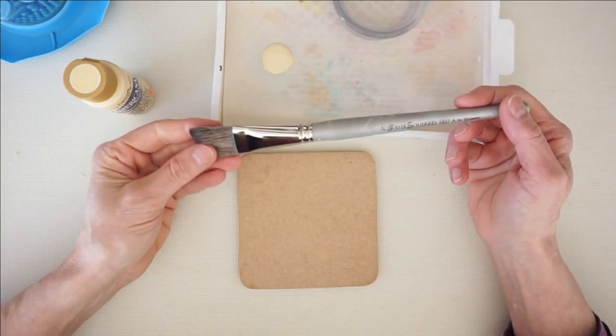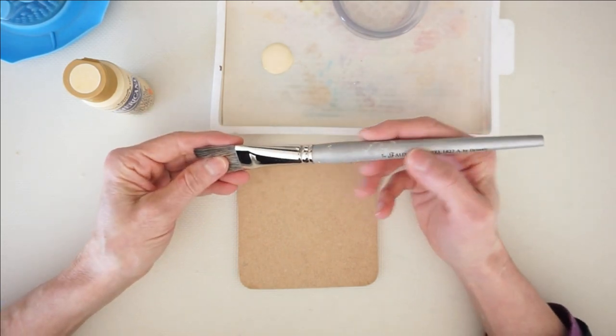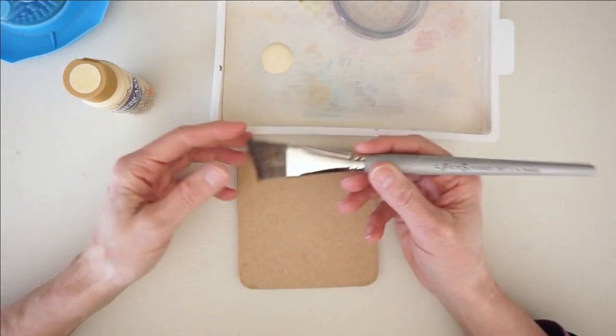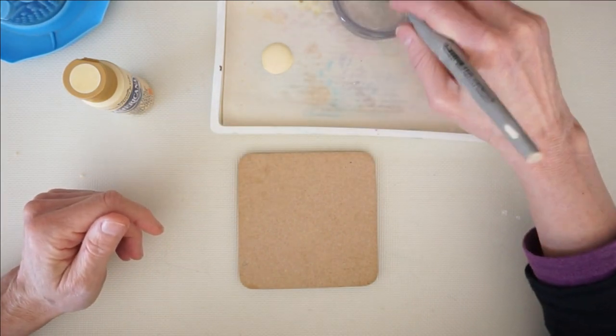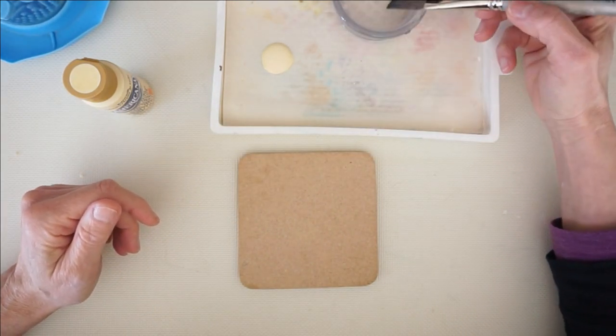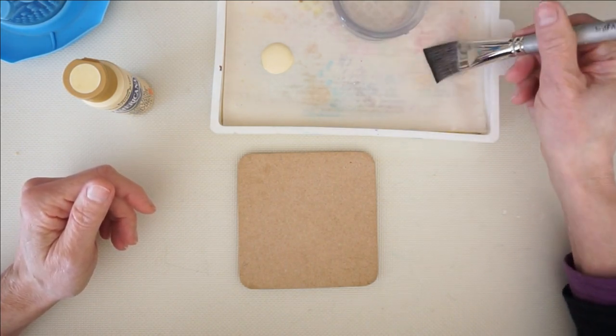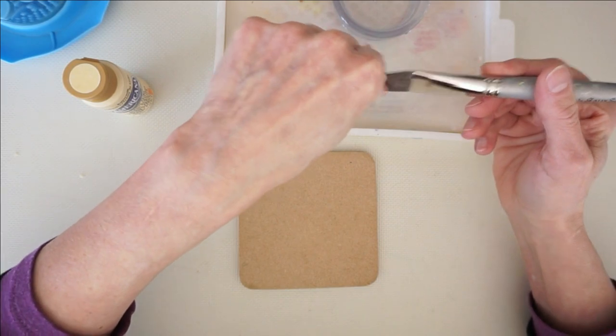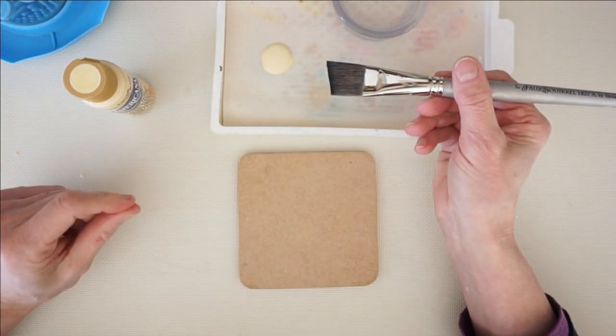I'm using a soft brush, a nice—this is like an angled shader, but it's one inch wide. This is called a faux squirrel. It's by Dynasty, but you can use any soft, wide brush that you want. It doesn't have to be an angler. And I'm wetting the brush, as you saw.